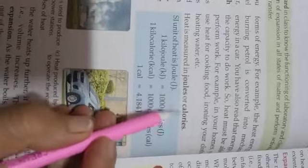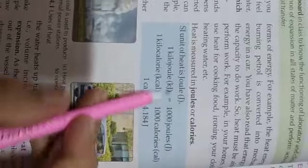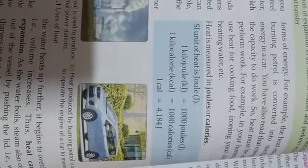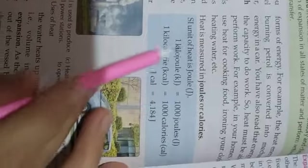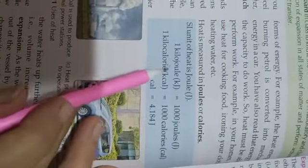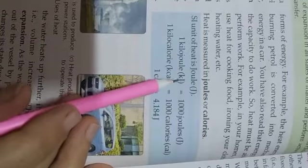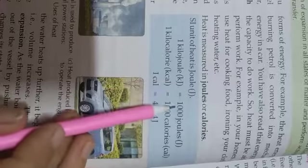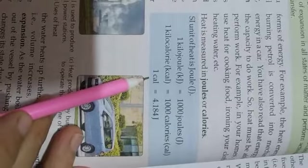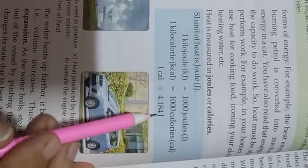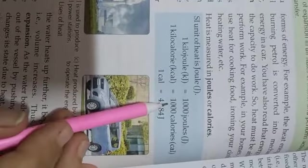Heat is measured in Joules. The SI unit of heat is the Joule. Just as we measure distance in meters or kilometers and milk in liters, heat is measured in Joules or calories. Key conversions: 1 kilojoule equals 1000 Joules; 1 kilocalorie equals 1000 calories; and 1 calorie equals 4.184 Joules. You have to learn these different terms.